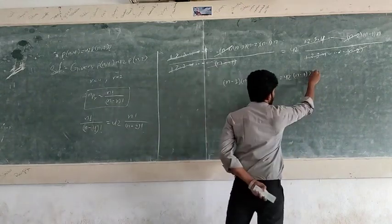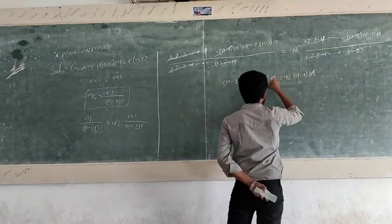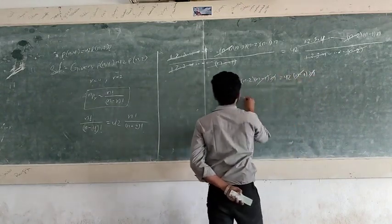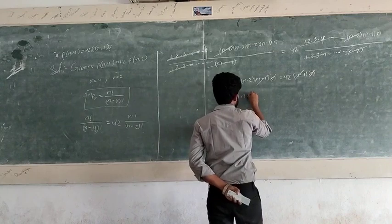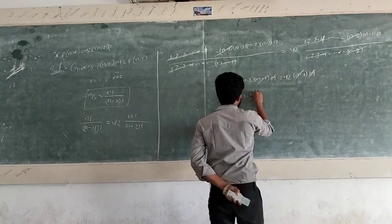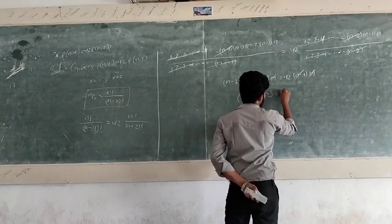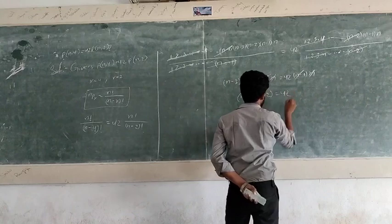We can cancel n and (n − 1) from both sides. This leaves (n − 3)(n − 2) = 42.